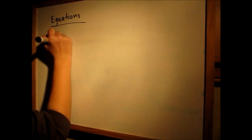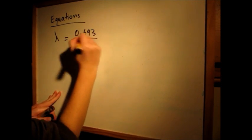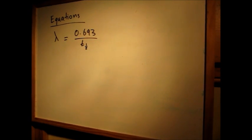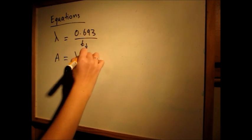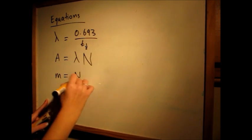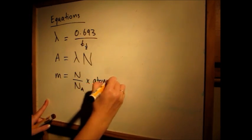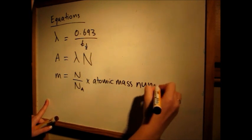These are the equations we'll be using to do this problem. Lambda is the decay constant in terms of the half-life. Activity is lambda times N number of atoms, and mass is N over NA times the atomic mass number.